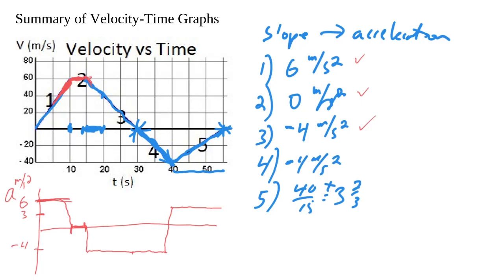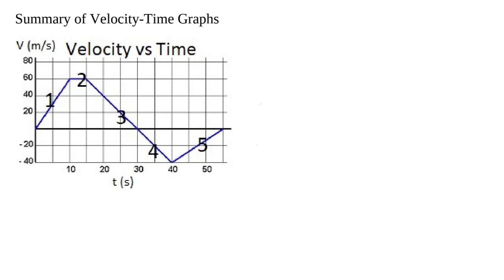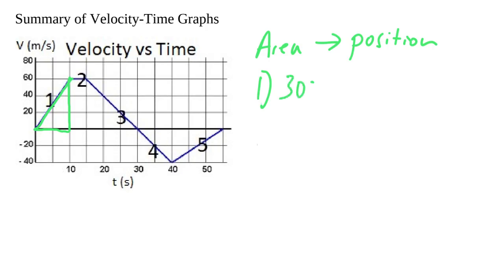The second major thing we're going to do is find the area of the graph, and that will give us our displacement — or position, to be more exact. For the first segment, we're going from 0 to 10 seconds, so we find the area of that triangle: 10 times 60, times one-half, is 300 meters. The second segment: 5 times 60 is also 300 meters.